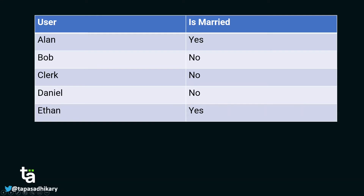Let's take a table example — a list of users showing whether they are married or not. Assume you need to change Daniel's marital status from No to Yes. You'd write DOM API calls to pick that element, but unfortunately you have to traverse the entire DOM structure representing that table, figure out where Daniel is, and then make the change. This traversal is costly if deeply nested, updating is more costly, and rendering is even more costly.